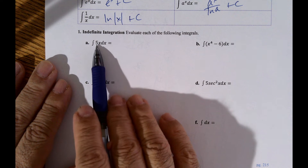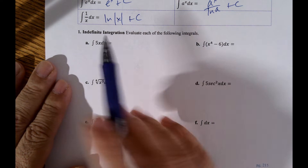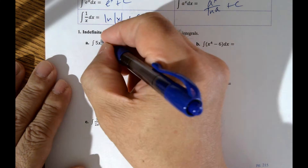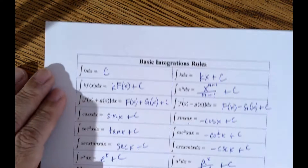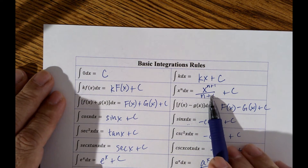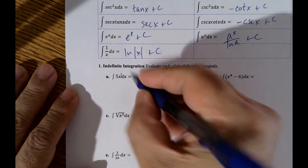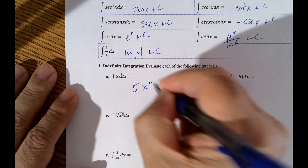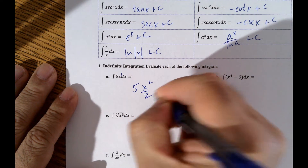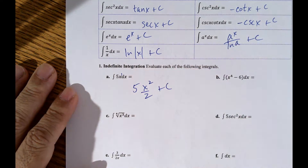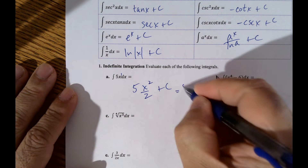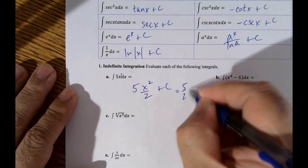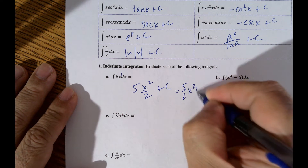So for the integral of 5x — this has an exponent of 1, so I use the power rule. I add 1 to the exponent and divide by the new exponent. That's going to be 5x squared over 2 plus a constant, or better written as 5 halves x squared plus C.